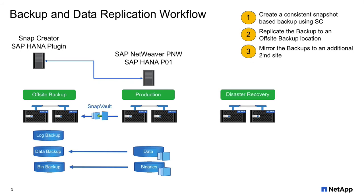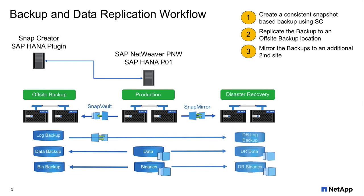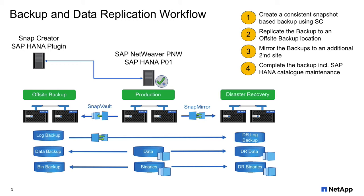Another thing is that customers often have a disaster recovery site, where they want to be sure that in the case of a disaster, it can take over production. So the backups need to be there as well. For this, we can configure Snap Creator to have a SnapMirror relationship so that all the data is automatically synchronized to the disaster recovery site. As a final step, Snap Creator completes the backup by maintaining the HANA backup catalog, so that HANA is aware of a successfully accomplished backup.